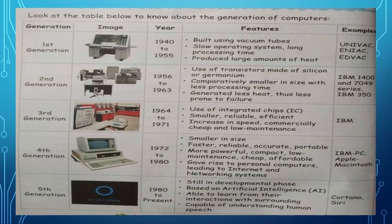4th Generation Computers, 1972 to 1980: Computers became smaller in size, faster, reliable, accurate, portable, more powerful, compact, low maintenance, cheap, and affordable. This era gave rise to personal computers, leading to the internet and network systems. Examples include the IBM PC and Apple machines.